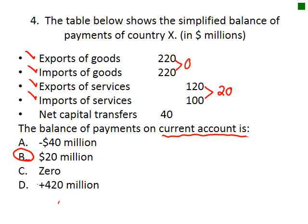The table below shows a simplified balance of payments of country X in millions. The balance of payments on current account: what belongs to the current account? Exports of goods, imports, exports of services, imports — but not net capital transfers, which is part of the capital or financial account. Exports of goods minus imports of goods equals zero, and exports of services gives a surplus of twenty. So the answer is twenty million.